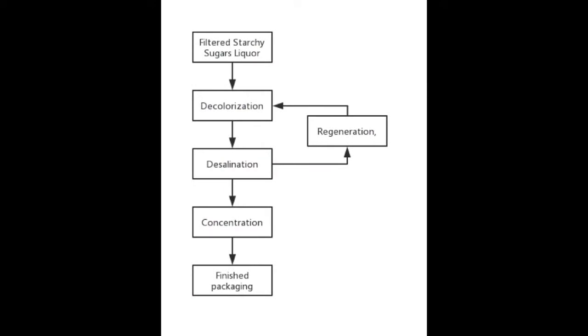The process advantages of the ion-exchange system for decolourization of starch sugar are as follows. First, it reduces the amount of media used for separation by 50–90%. Second, it can handle high concentration materials with a stable system and good product quality. Third, it reduces wastewater discharge by 30–85%.